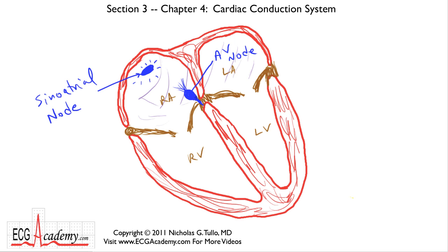The AV nodal cells are connected to a network of very long heart muscle cells — branching cells, like branches of a tree. These long cells are known as Purkinje fibers, spelled P-U-R-K-I-N-J-E.